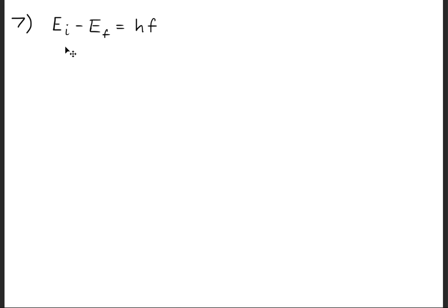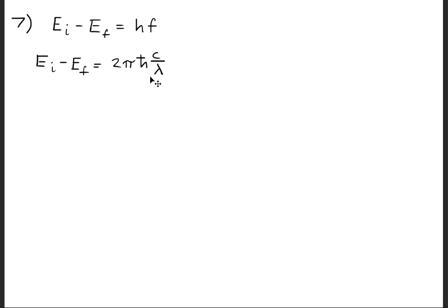Next, we use the relationship that the difference in energy — initial energy minus final energy — equals Planck's constant times frequency. We rewrite frequency as the speed of light divided by wavelength, and Planck's constant as 2π times h-bar. Isolating the inverse wavelength gives one over λ equals the initial energy minus the final energy, divided by 2π times h-bar times the speed of light.